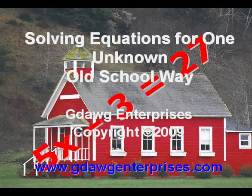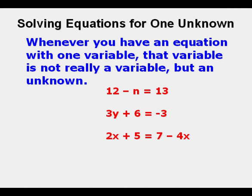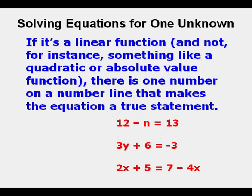Solving equations for one unknown the old school way. Whenever you have an equation with one variable, that variable is not really a variable but an unknown. If it's a linear function and not, for instance, something like a quadratic or absolute value function, there is one number on a number line that makes the equation a true statement.